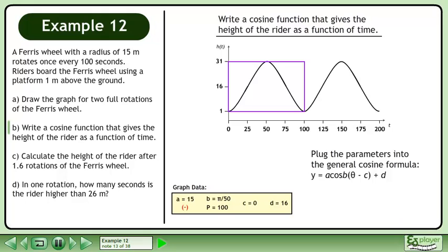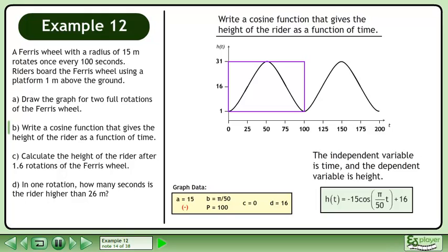Plug the parameters into the general cosine formula Y equals A cos B theta minus C plus D. The independent variable is time, and the dependent variable is height. The function is H of t equals negative 15 cos pi over 50 t plus 16.